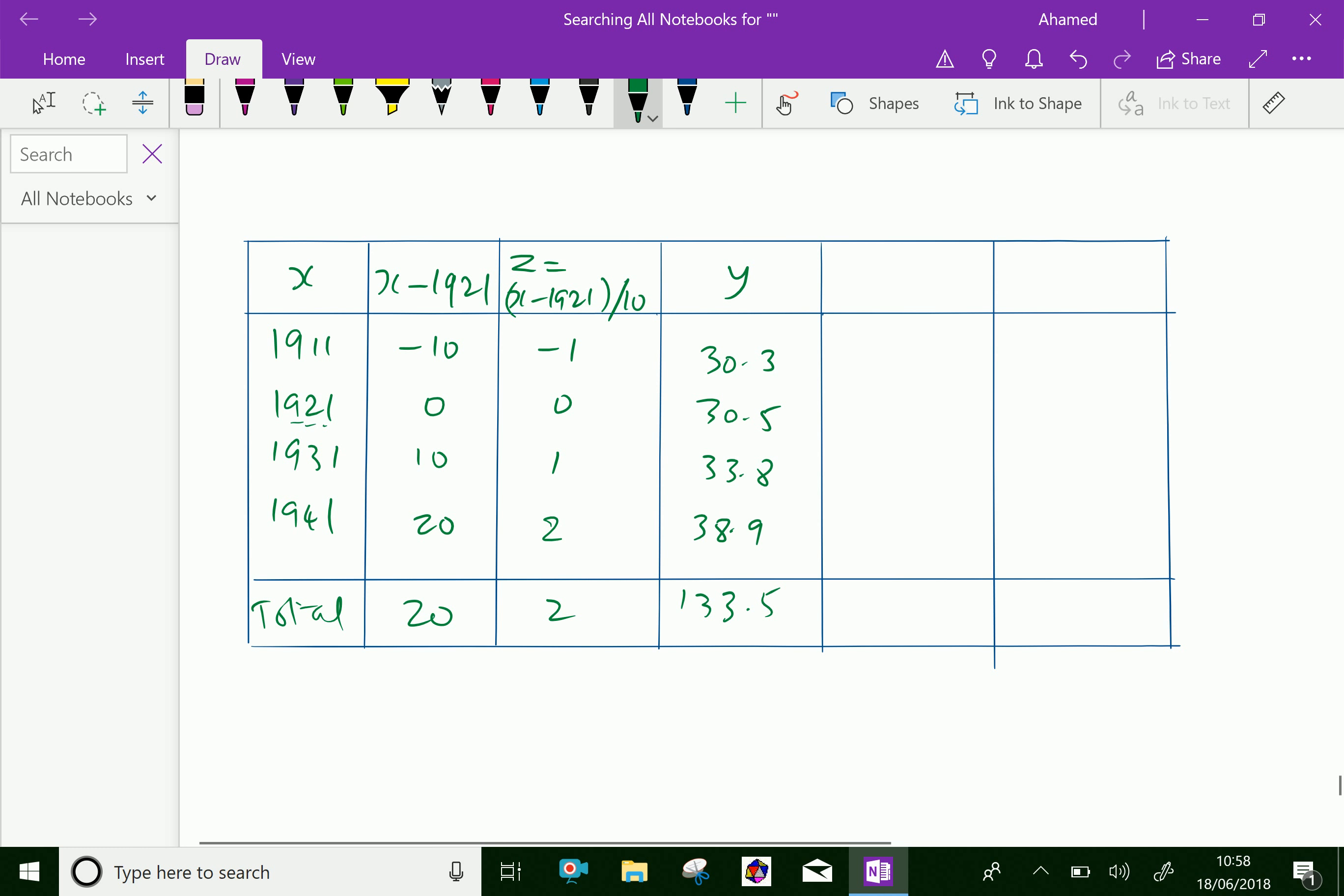Now, we will find the product of y and z, which gives minus 30.3, 0, 33.8, and 2 into 38.9 is 77.8. The total is 81.3. Next is z square column: minus 1 whole square is 1, 0 square is 0, 1 square is 1, and 2 square is 4. The total is 6.